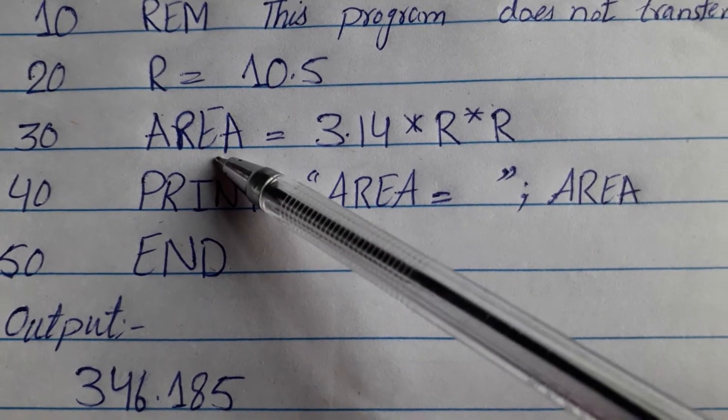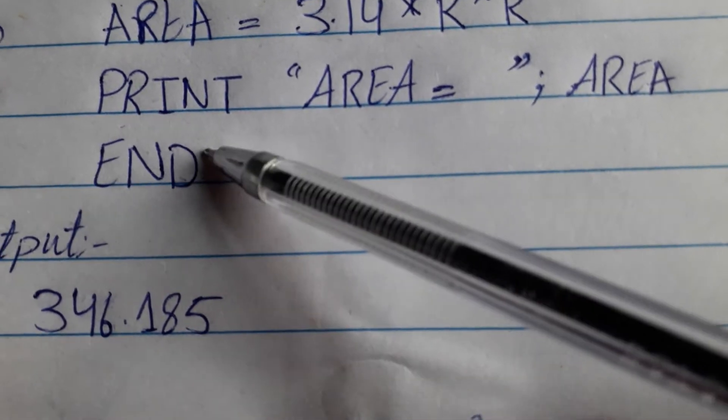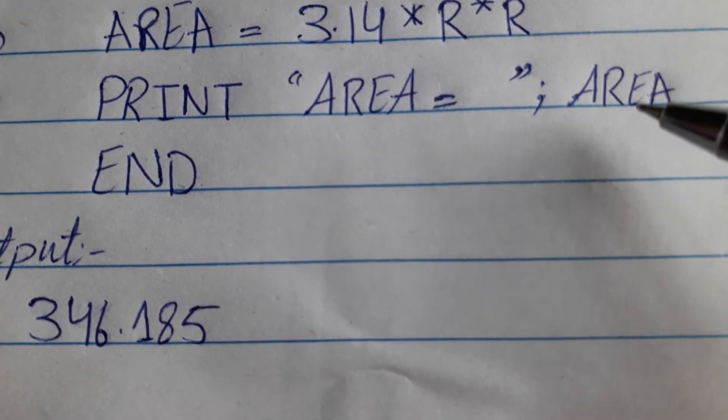After we have to print it, we have to print it. We count to print. Area is equal to area.